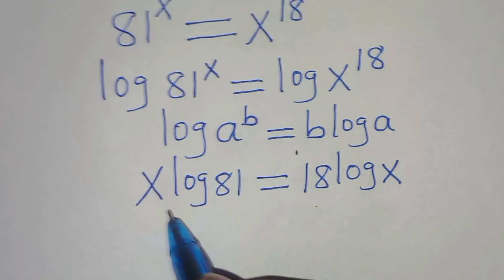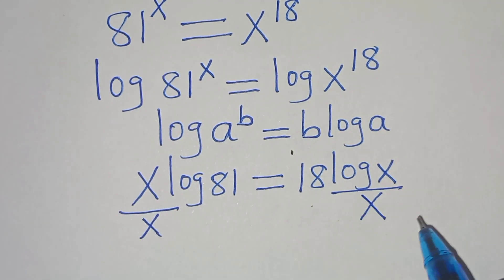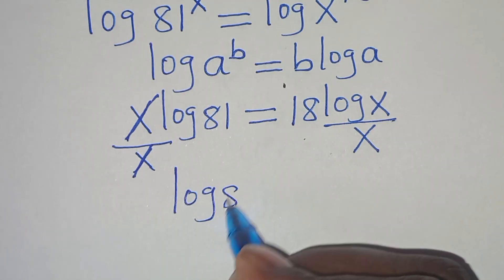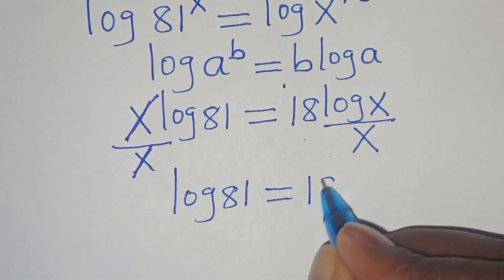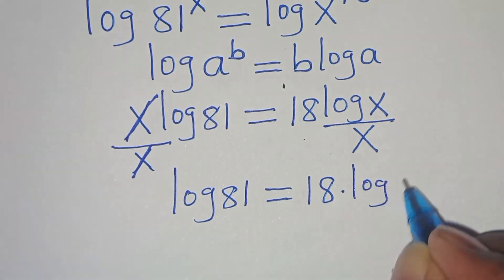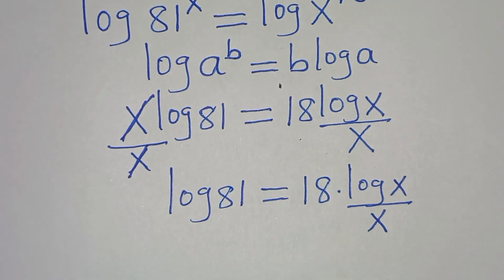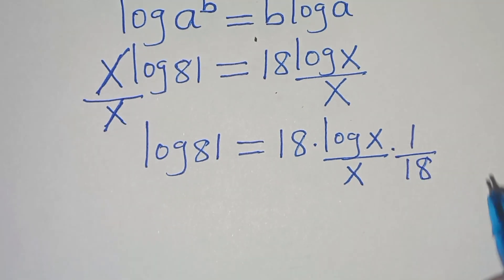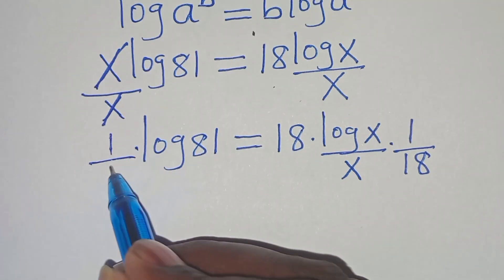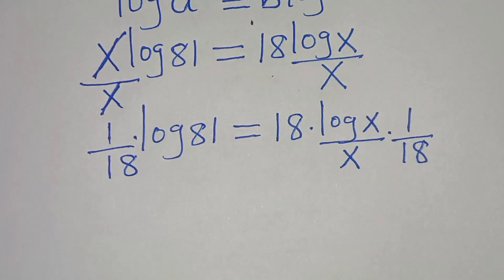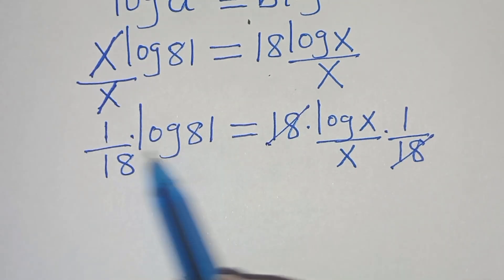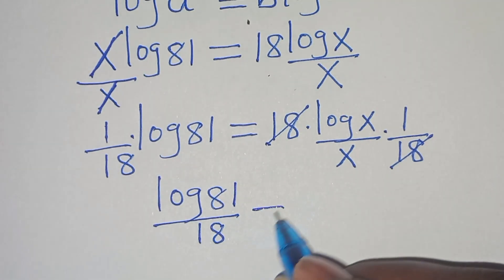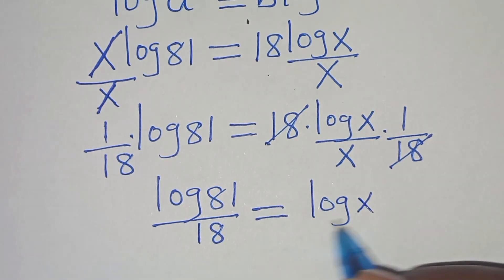Now let's divide both sides by x, so x simplifies, giving us log 81 equals 18 multiplied by log x divided by x. The next step is to multiply both sides by 1 over 18. The 18s simplify, and we have log 81 divided by 18 equals log x divided by x.